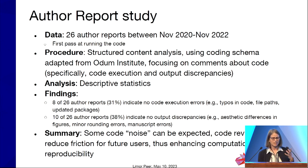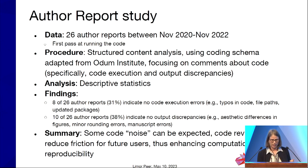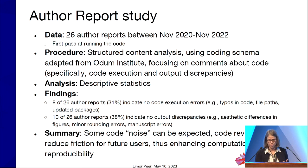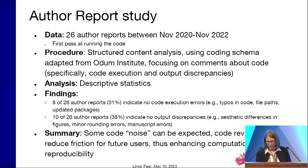Typically these are small errors — things like typos, file paths, updated packages that are not updated. We also found that in about 38% of our author reports there were some output discrepancies flagged for researchers. Sometimes they're minor, like rounding errors or manuscript errors such as transposing table columns. Sometimes they're aesthetic differences, like colors of graphs. We work with our researchers to fix these issues and to produce a better replication package or research compendium.